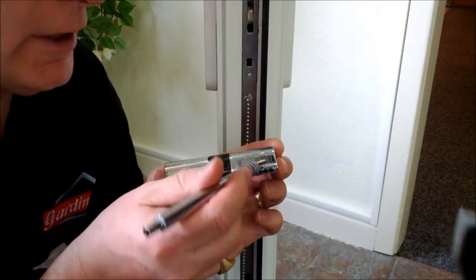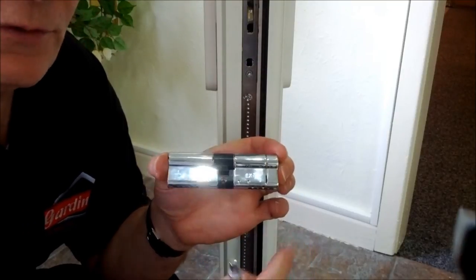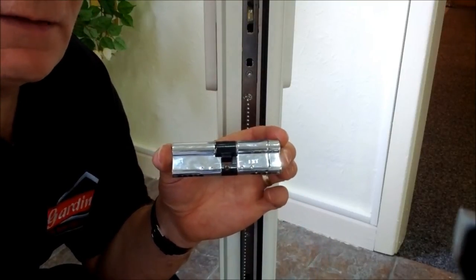This is designed to shear if someone attacks with a pair of mole grips from outside and tries to remove the face of the cylinder.